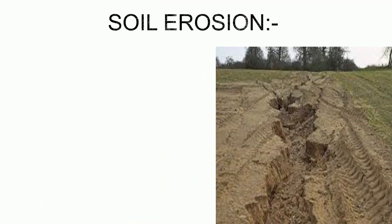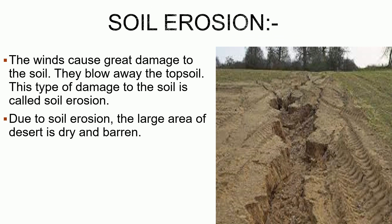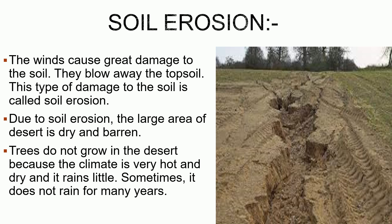Now, let's learn about soil erosion. The winds cause great damage to the soil — they blow away the top soil. This type of damage to the soil is called soil erosion. Due to soil erosion, large areas of the desert are dry and barren. Trees do not grow in the desert because the climate is very hot and dry, and it rains very little — sometimes it does not rain for many years.